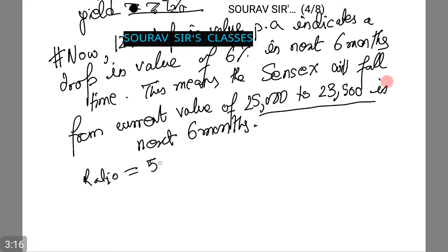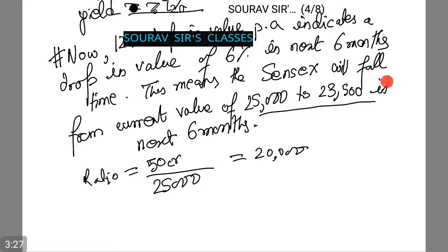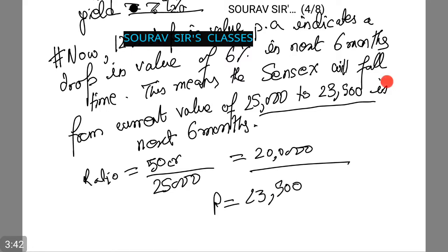Since the ratio equals 50 crores divided by 25,000, which equals 20,000, the portfolio manager needs to buy 20,000 put options with an exercise price of 23,500.